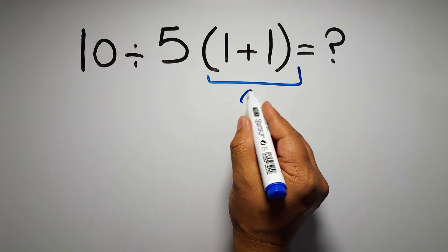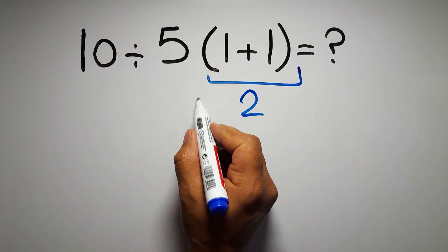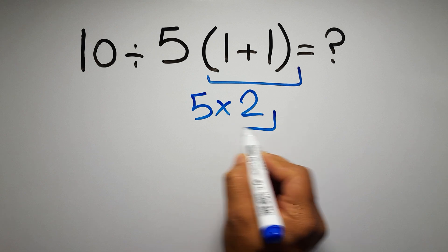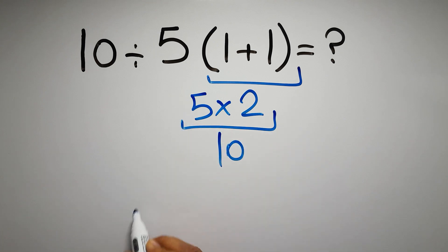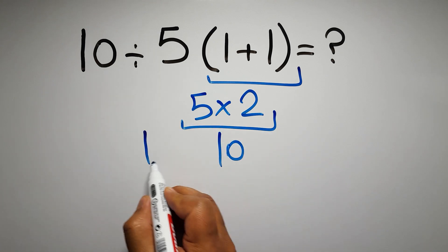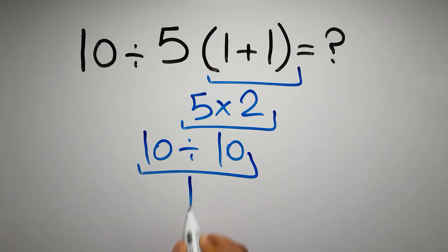1 plus 1 gives us 2 and 5 times 2 equals 10, so 10 divided by 10 which equals 1. But this answer is not correct because according to the order of operations...